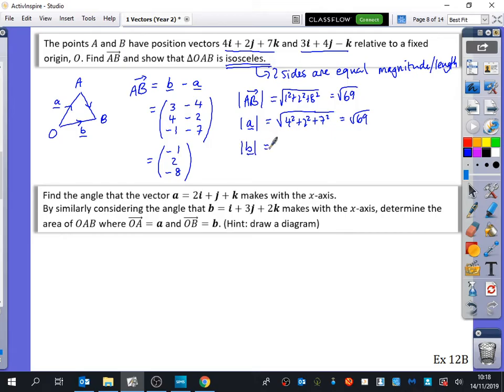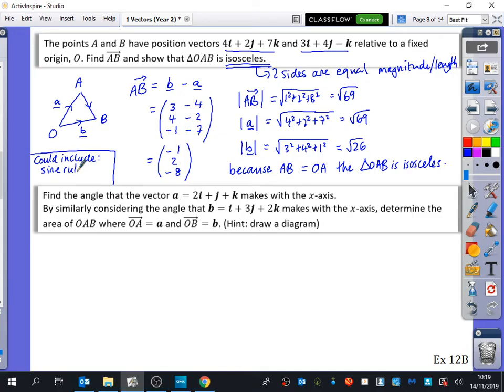Why do you think I also need to check out B? To make sure it's not equilateral, because it could be equilateral. So I'm going to very quickly show what the B is. That's going to be 3 squared, 4 squared, and 1 squared. So that's 26, I think. And we can say, because AB is equal to OA, the triangle OAB is isosceles. They may ask you some questions which could include the sine rule or the cosine rule. All you need to do first is find out the sides of the triangle, and then maybe you can do some things from there. They might even use half AB sine C. Just be prepared for that.